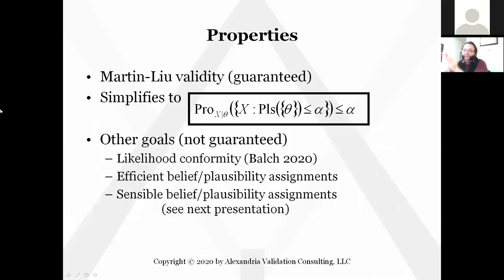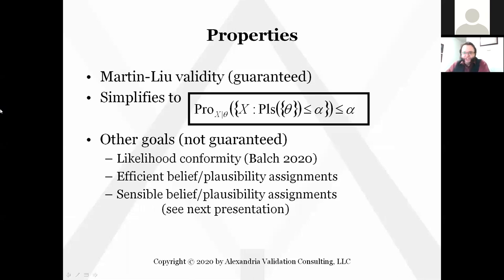What are the properties of a confidence curve? The belief assignments are reliable — if you start from that test statistic formulation, you're going to get reliable assignments of belief. Moreover, the Martin-Liu validity criterion, which applies to all sets everywhere, can be simplified to one condition you need to check: for every individual parameter value, if you sample the data assuming that's the true parameter value, the plausibility at that parameter value should have a right-of-uniform distribution. We're going to use that criterion to check the validity of our structures later in the presentation.